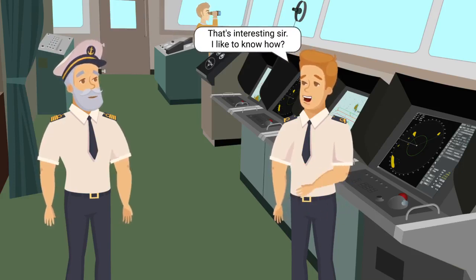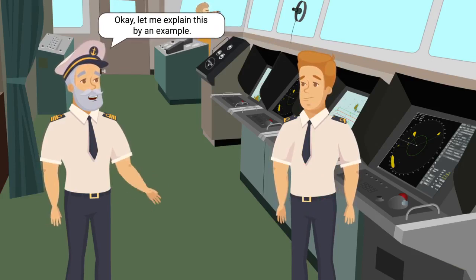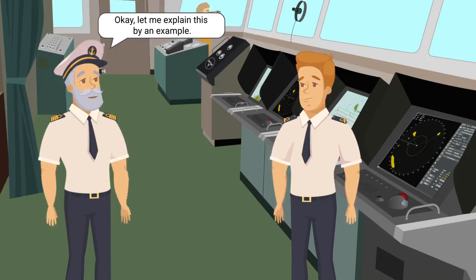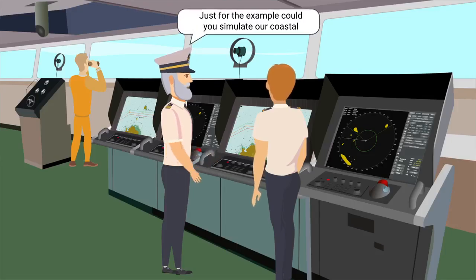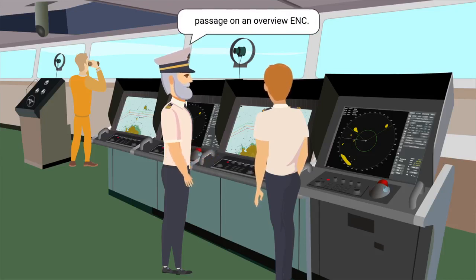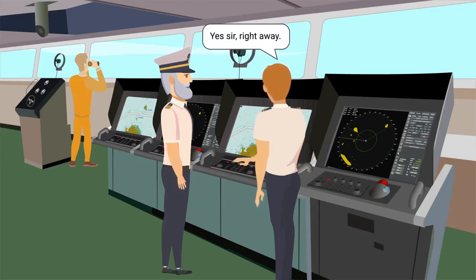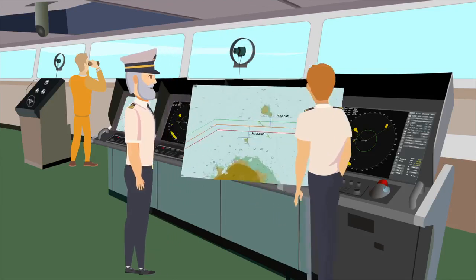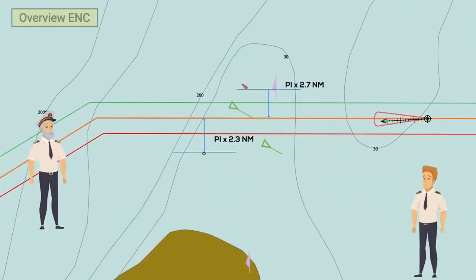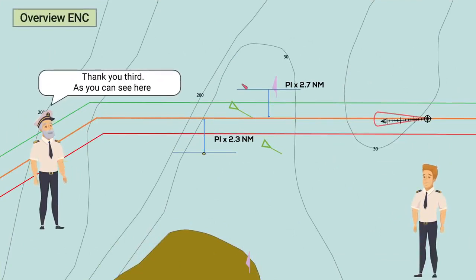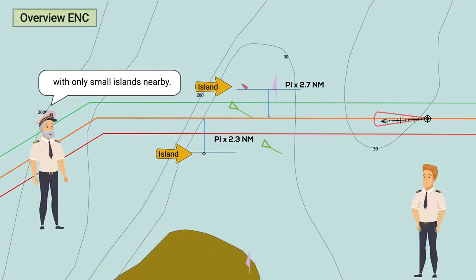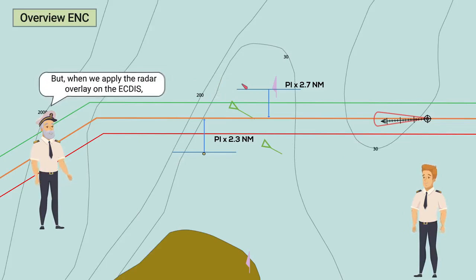That's interesting, sir. I'd like to know how. Okay, let me explain this by an example. Just for the example, could you simulate our coastal passage on an overview ENC? Yes sir, right away. Here you go, sir. Thank you, Third. As you can see here on the overview ENC, the coastal passage is clear with only small islands nearby.